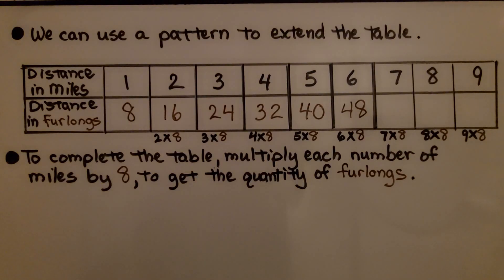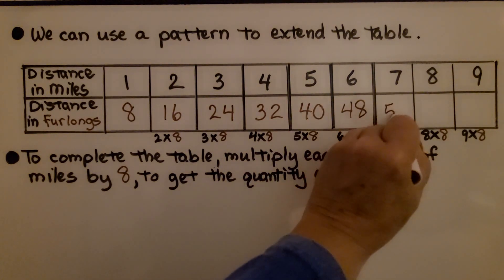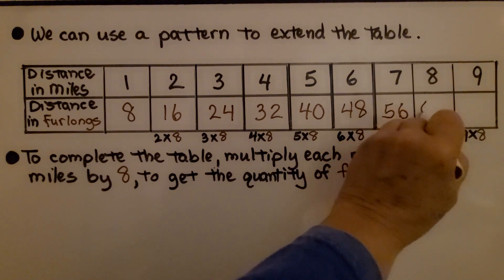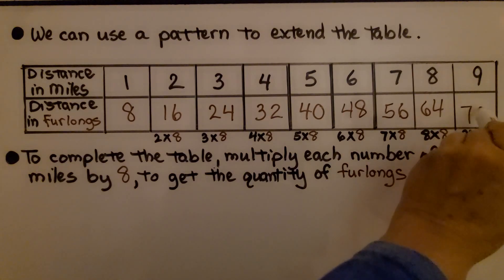We can use a pattern to extend the table. We have our distance in miles and our distance in furlongs. 1 mile is 8 furlongs. So to complete the table, we multiply each number of miles by 8 to get the quantity of furlongs. We have 7, and 7 times 8 is 56. We have 8, 8 times 8 is 64, and 9 times 8 is 72.